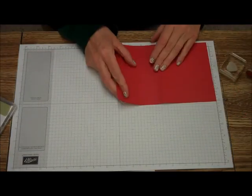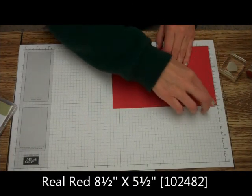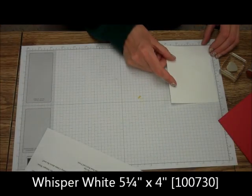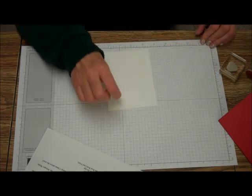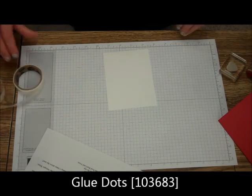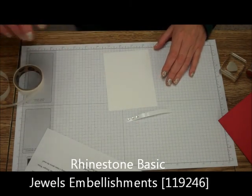You're going to need a piece of Real Red cardstock, 5 1⁄2 by 8 1⁄2, and a piece of Whisper White cardstock, 5 1⁄4 by 4 inches. Plus, you're going to need your glue dots and some rhinestone embellishments.